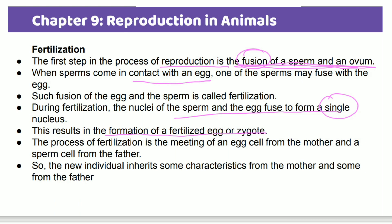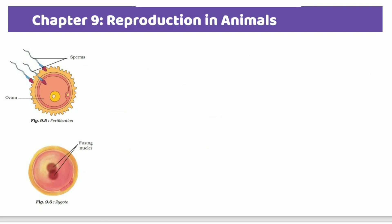The process of fertilization is the meeting of egg cells from the mother and sperm cells from the father. An individual inherits some characteristics from the mother and some from the father. The random sperm contacts the egg, the nuclei fuse, and a zygote develops.